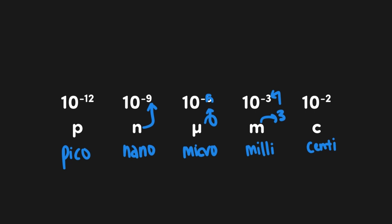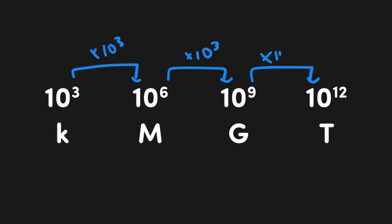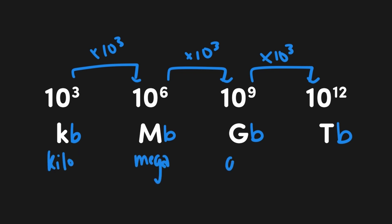On the larger end of the scale, we have kilo, mega, giga, and tera. All these values are separated by three factors of 10 and are the common computer storage terms. Think kilobyte, megabyte, gigabyte, and terabyte to remember their order — with kilo being 10 to the 3, mega 10 to the 6, giga 10 to the 9, and tera 10 to the 12.